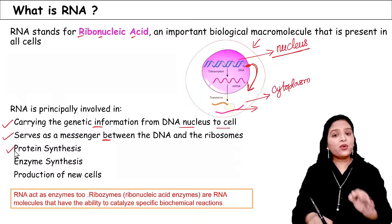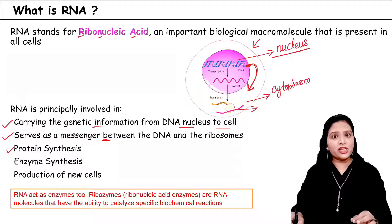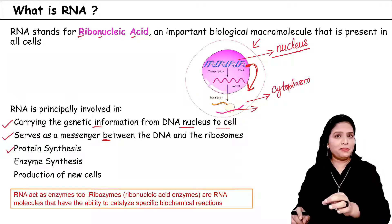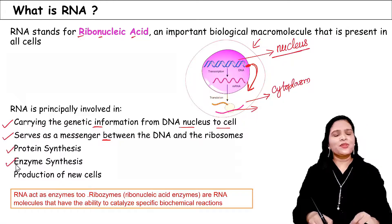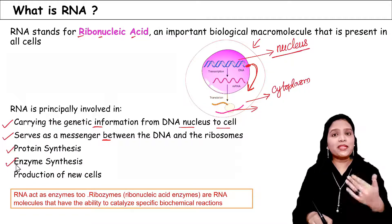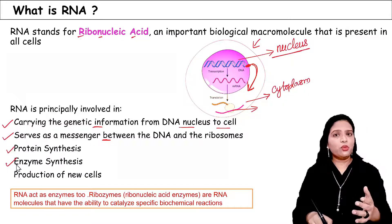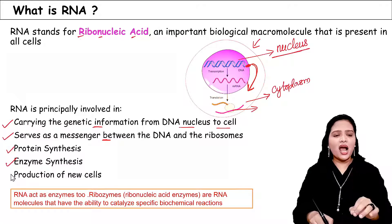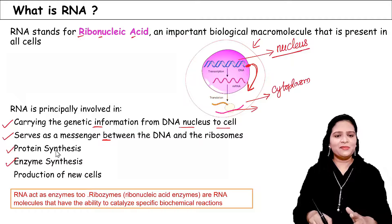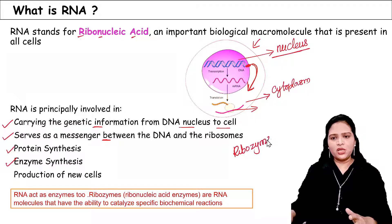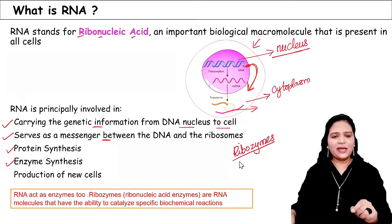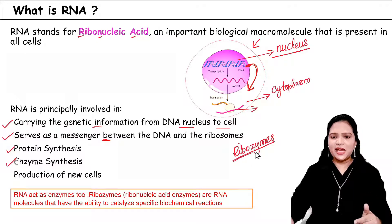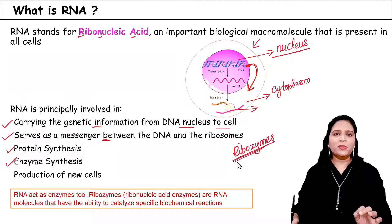RNA is also involved in protein synthesis. An mRNA contains information on how to connect amino acids into a peptide chain to form proteins. RNA is involved in protein synthesis and enzyme synthesis. Some RNA molecules themselves act directly as enzymes — an example is ribozymes, also called ribonucleic acid enzymes. These are RNA molecules that have the ability to catalyze specific biochemical reactions, acting directly as enzymes rather than just making them.